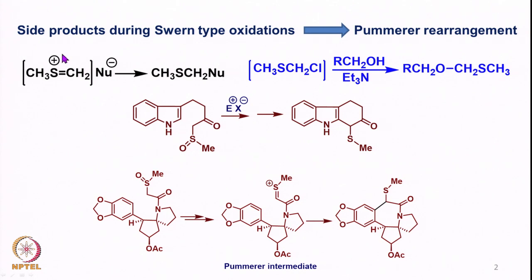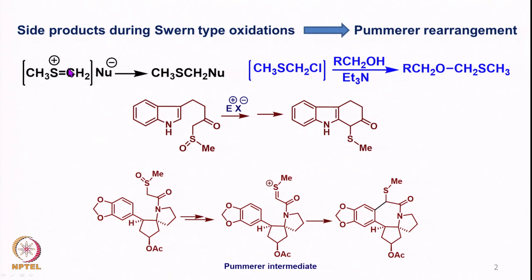We also saw various side products that form during Swern-type oxidations arising from what is called the Pummerer rearrangement. In the context of DMSO and electrophilic species, an intermediate forms having a sulfonium ion, a double bond, and a leaving group that can act as a nucleophile. This can react to form an alpha-functionalized sulfide, which is also a Pummerer-type intermediate.